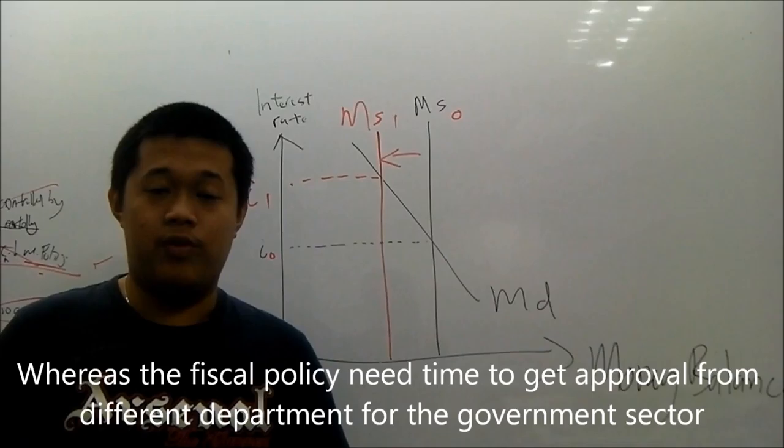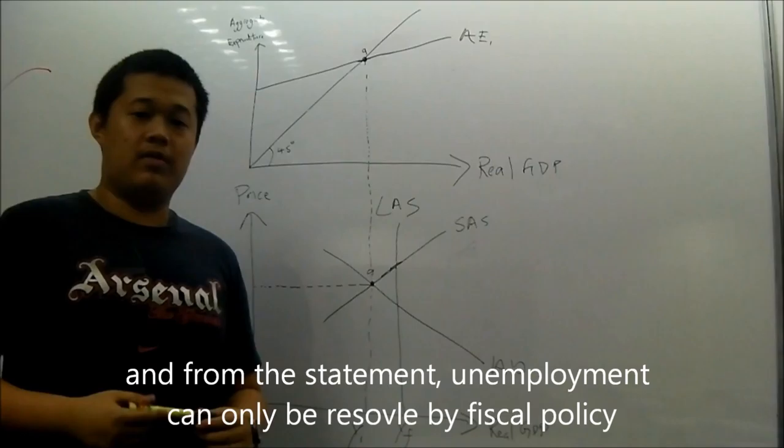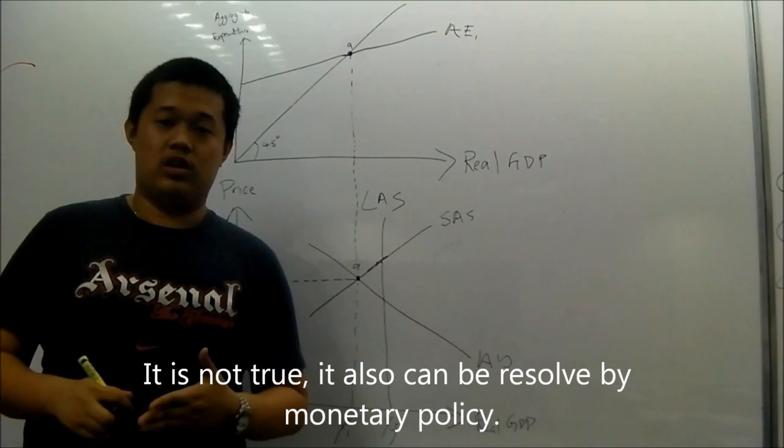In this case, monetary policy is better than fiscal policy because monetary policy can be implemented very fast, very quickly, whereas fiscal policy needs time to get approval from different departments from the government sector in order to be implemented.